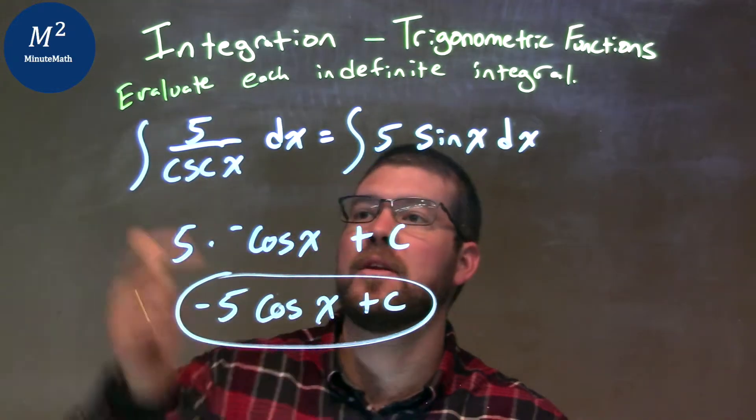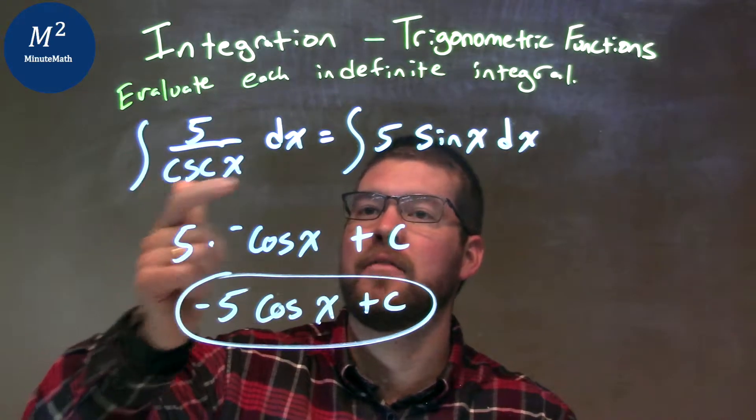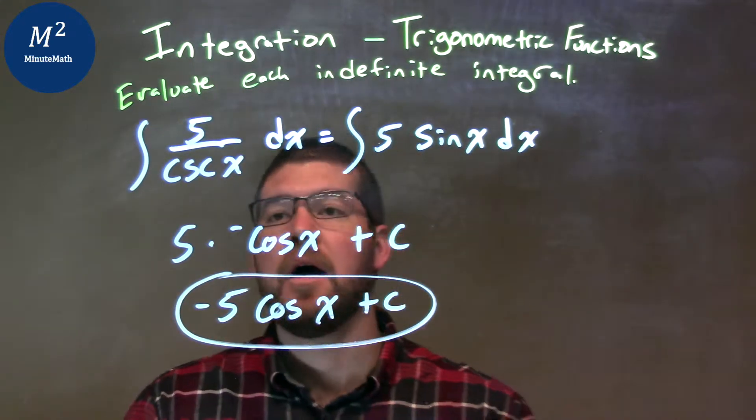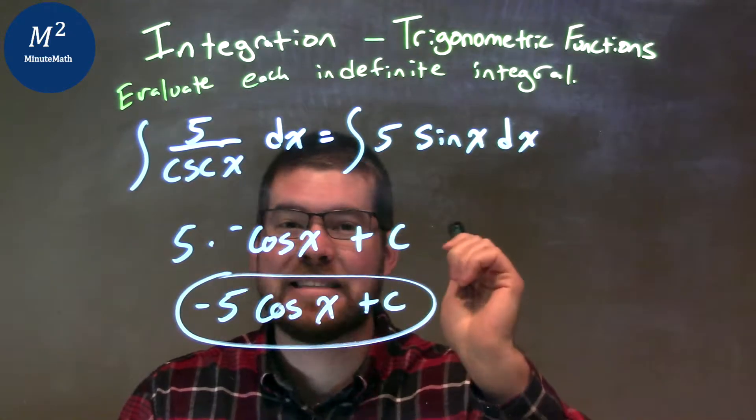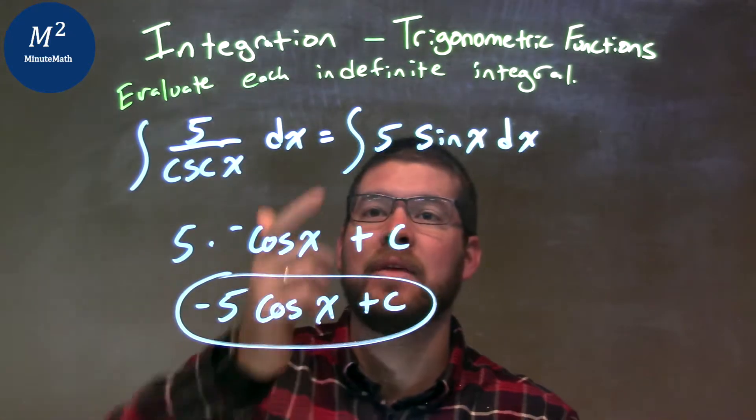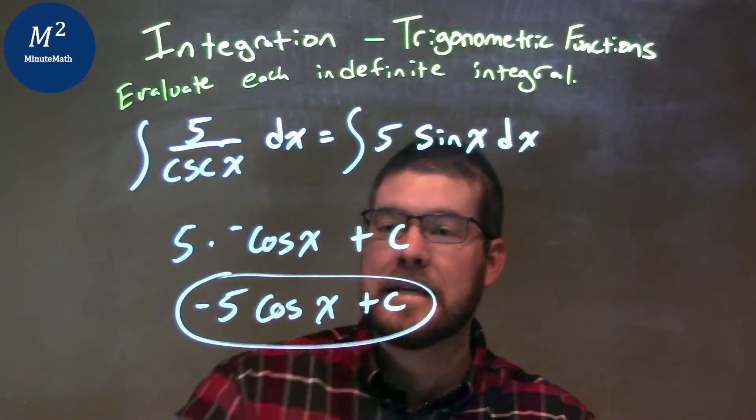So, let's recap that. We're given the integral of 5 over cosecant of x dx. I'd like to simplify this ahead of time. I know 1 over cosecant of x is the same thing as sine of x, so I know the integral of 5 sine of x dx.